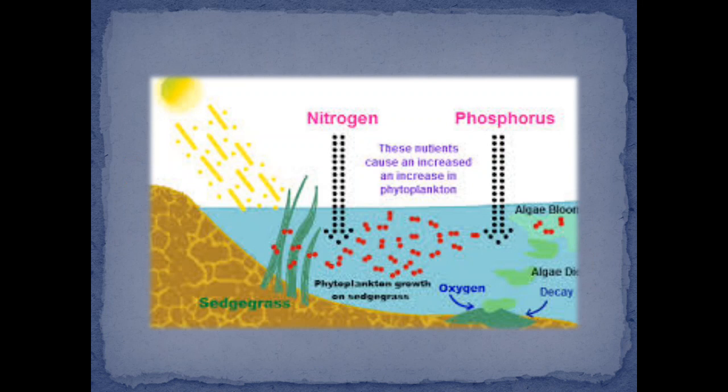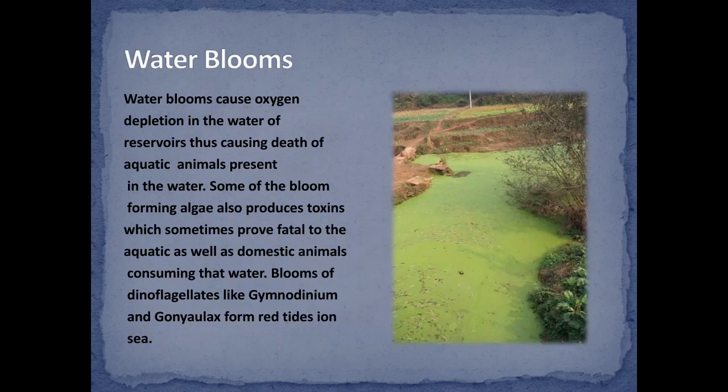You can observe here in the diagram how blooms affect the water. Water blooms cause oxygen depletion in water reservoirs, thus causing death of aquatic animals present in the water. Some bloom-forming algae also produce toxins, which sometimes prove fatal to aquatic as well as domestic animals consuming that water. Water blooms of dinoflagellates like Gymnodinium form red tides on sea.